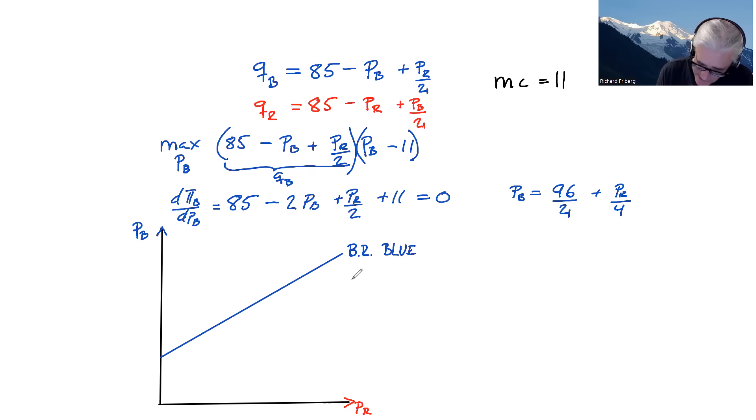Drawing this, so 96 over 2, that's 48, and then has an upward slope of one-fourth. So the higher price that blue's competitor is setting, the higher will the price for blue be. So this makes sense intuitively. And similarly, if red were to lower its price, blue would be also countering by or responding by lowering its price as well.